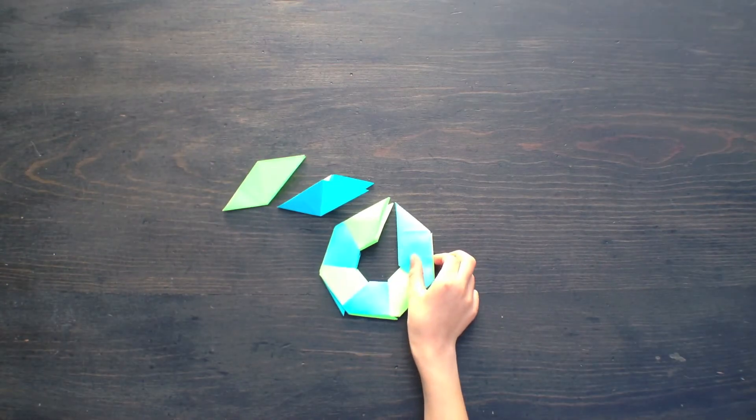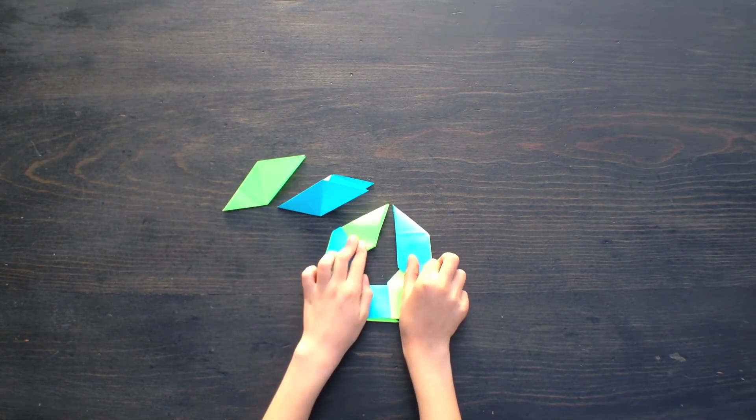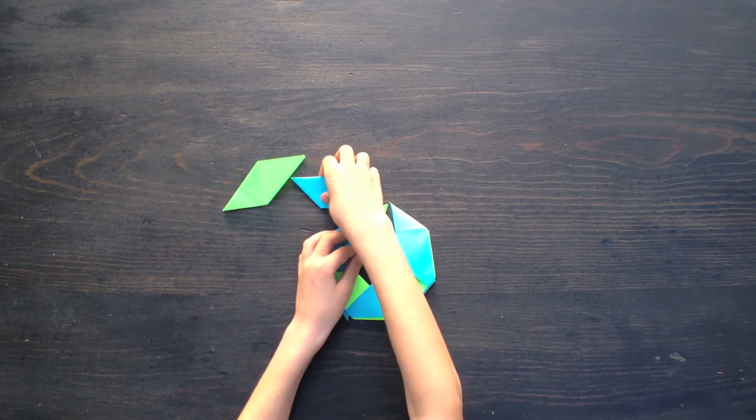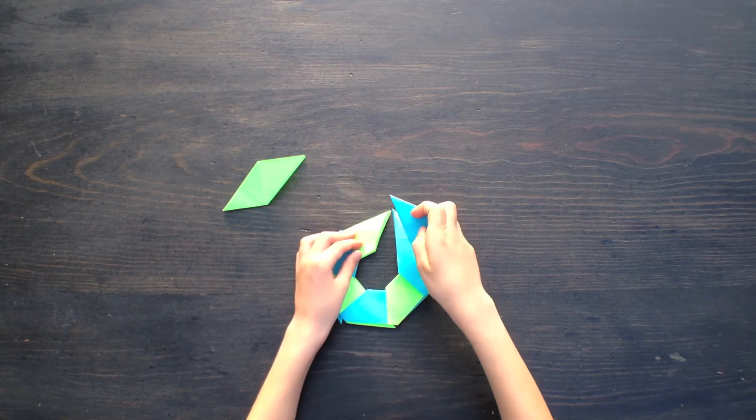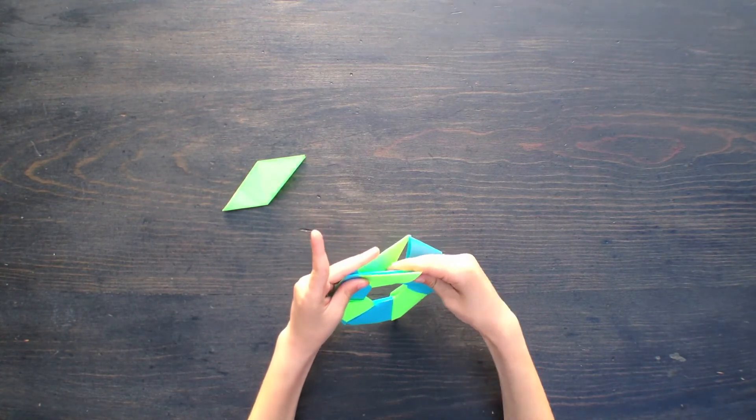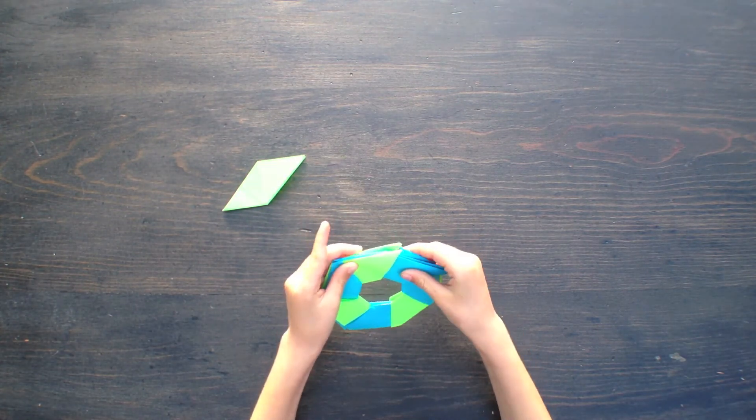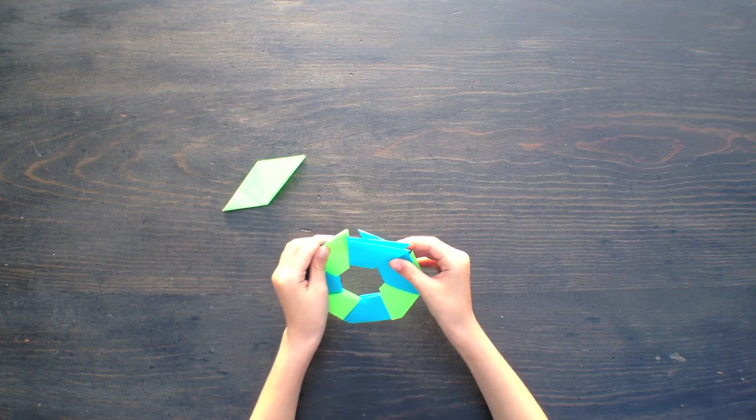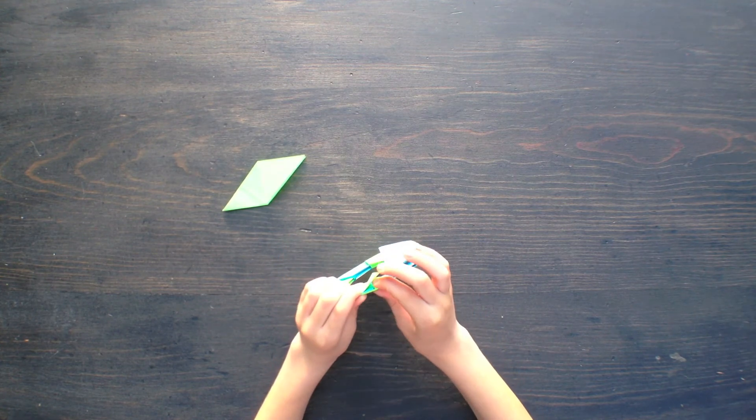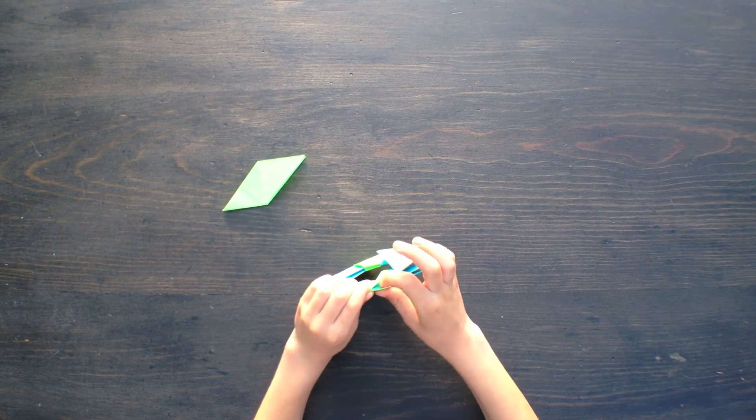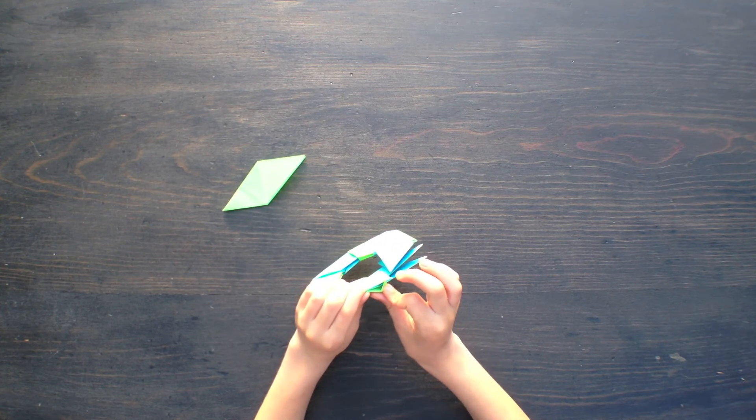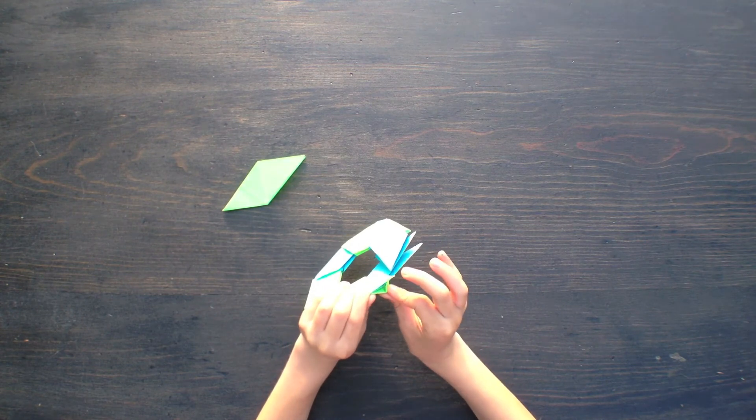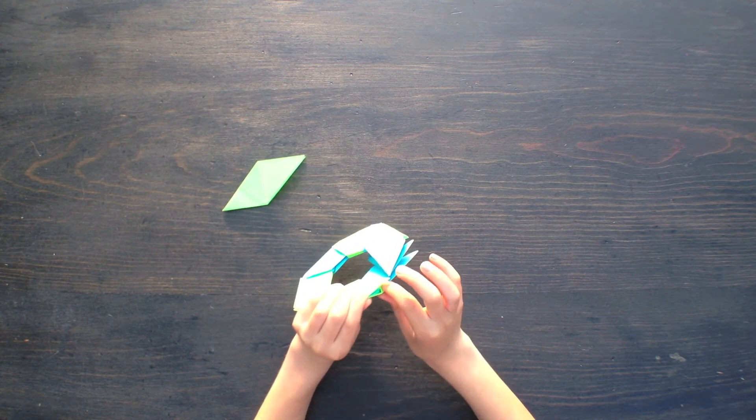This is where it gets tricky, so pay attention. Take this and tuck it in like this and make this go over here, the same as you did with the other pieces. Do these little corners. Tuck them in.